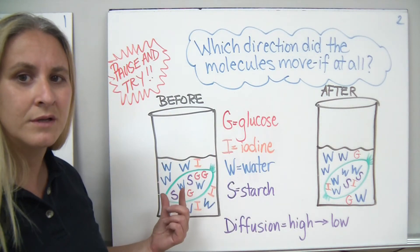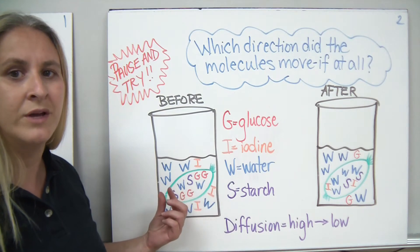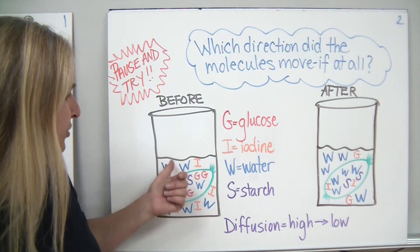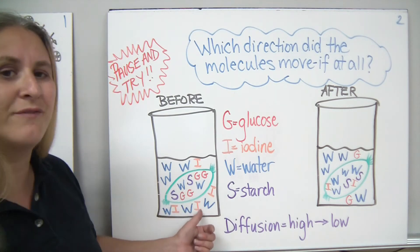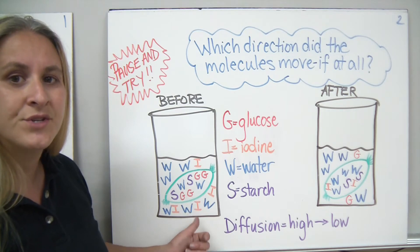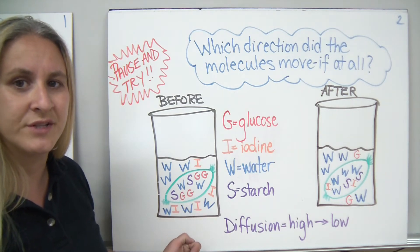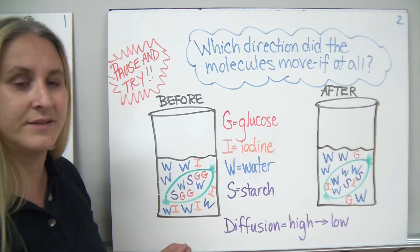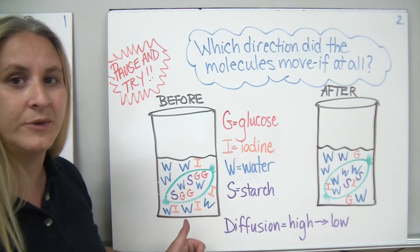So if you notice, I tried to use W's for my water. As I set up my before experiment, I showed that there were six water molecules outside and two water molecules inside to represent the relative concentrations of water inside and outside of our pretend cell, that membrane that we used.